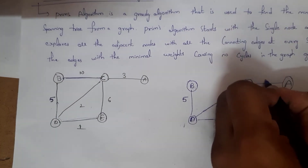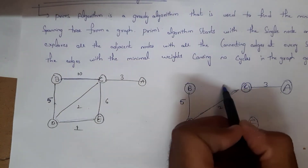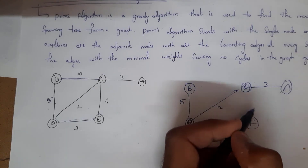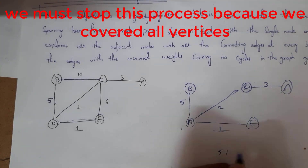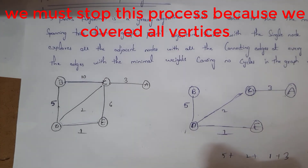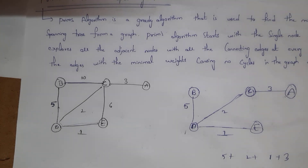After selecting D to E, the next adjacent node is C. I connect using weight 2, and then C to A with weight 3. Connecting B to C or C to E would form a cycle, so we ignore those. Total weight is 5 + 2 + 1 + 3 = 11 units. We keep connecting adjacent nodes with minimum weights until the minimum spanning tree is formed, ignoring any edge that creates a cycle.